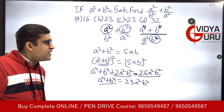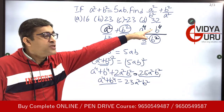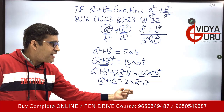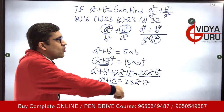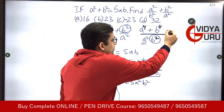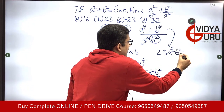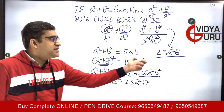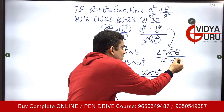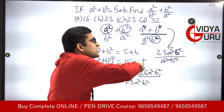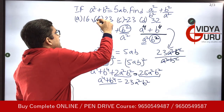Now we put this value into our expression. The numerator becomes 23a²b², and the denominator is a²b². So a²b² cancels out and we are left with 23. The answer is option B, 23 — don't get confused, option C is minus 23.